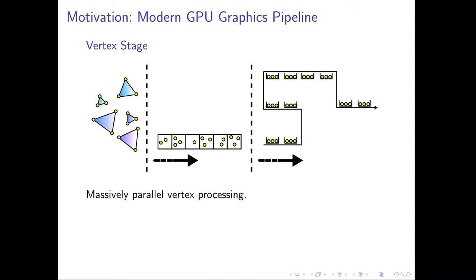After vertices are entered into the graphics pipeline, what ensues is a massively parallel processing stage that applies certain uniform operations on each and every vertex. Those operations may, for example, be lighting operations, or 3D transformations like rotations, translations, or uniform scales — executed uniformly and in a bulk processing fashion on each vertex.